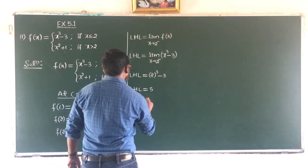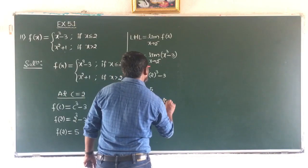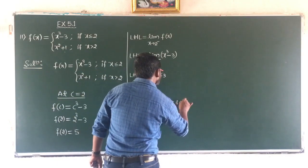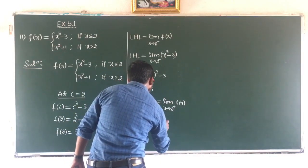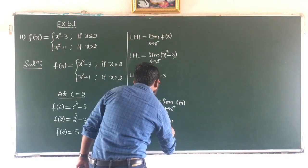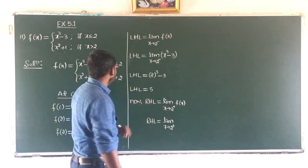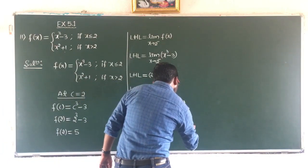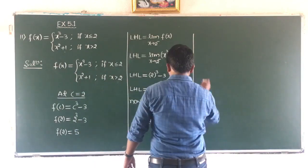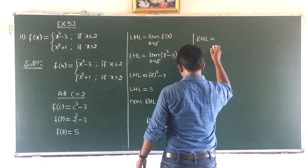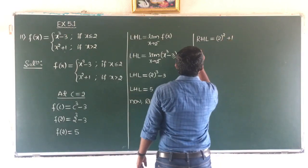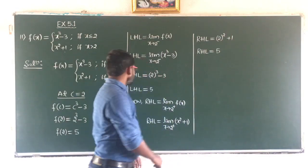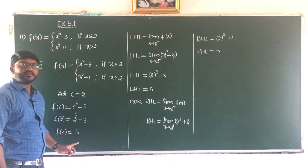For the right hand limit, RHL equals limit as x tends to 2 plus of f(x). Since 2 positive means x greater than 2, the function is x square plus 1. Applying the limit, 2 square plus 1 is 4 plus 1, so RHL equals 5. LHL is 5, RHL is 5, and the value of the function is also 5 — all three coincide.